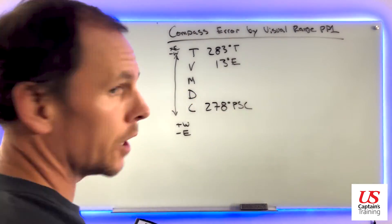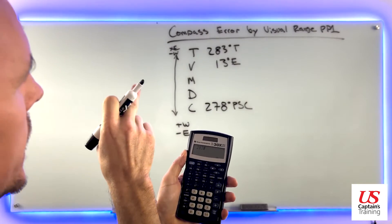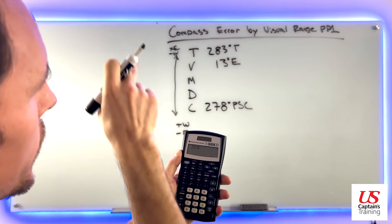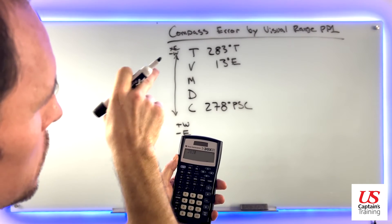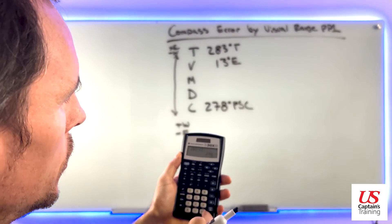Let's crunch these numbers. 283, and now 13 east means you're going down, so you subtract east. 283 minus 13 equals 270 degrees magnetic.